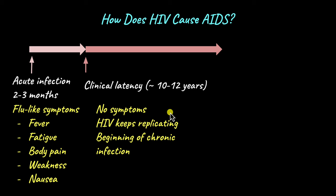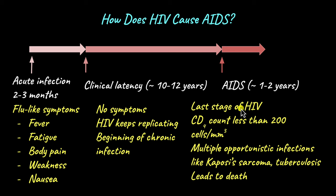During this clinical latency period, as the T lymphocyte count decreases, the body is susceptible to a lot of opportunistic infections — infections that could have otherwise been avoided by a healthy immune system. An adequate number of T lymphocytes and macrophages could have prevented these infections, but because HIV has infected and destroyed the T lymphocytes, the body is susceptible to these infections, and that is what causes AIDS. AIDS is categorized by the presence of multiple opportunistic infections like Kaposi's sarcoma, which is a type of cancer, tuberculosis, and many other viral, bacterial, and fungal infections. During this last stage, the CD4 cell count becomes less than 200 cells per millimeter cube, and the disease lasts about 1 to 2 years, inevitably ending in death.